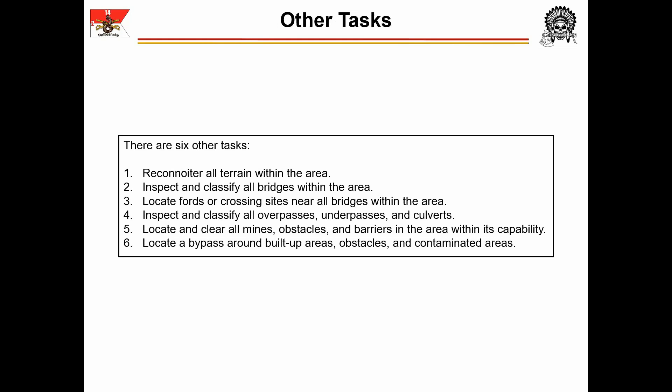The second task is to inspect and classify all bridges within the area. The third, to locate fords or crossing sites near all bridges within the area. And the fourth, to inspect and classify all overpasses, underpasses, and culverts. These three tasks are fairly straightforward — classifying bridges, even unnamed ones, will provide further options to the commander for infiltration into the AO. The fifth task, to locate and clear all mines, obstacles, and barriers in the area within the team's capability, is more applicable to other reconnaissance units than C-Troop. The sixth, to locate a bypass around built-up areas, obstacles, and contaminated areas, is an implied task if the team is moving toward an NAI.